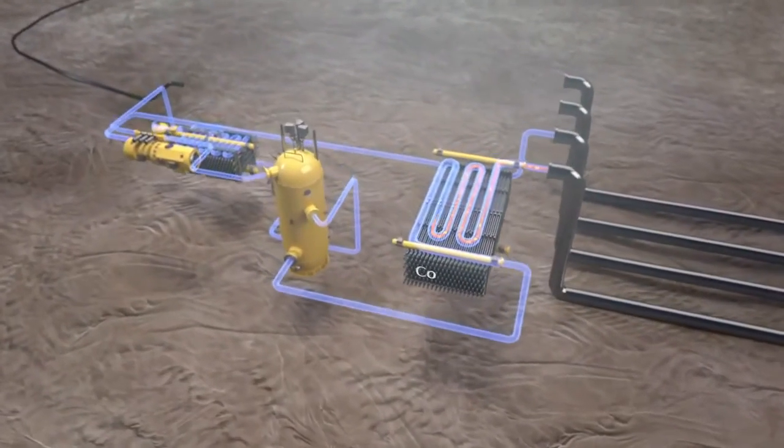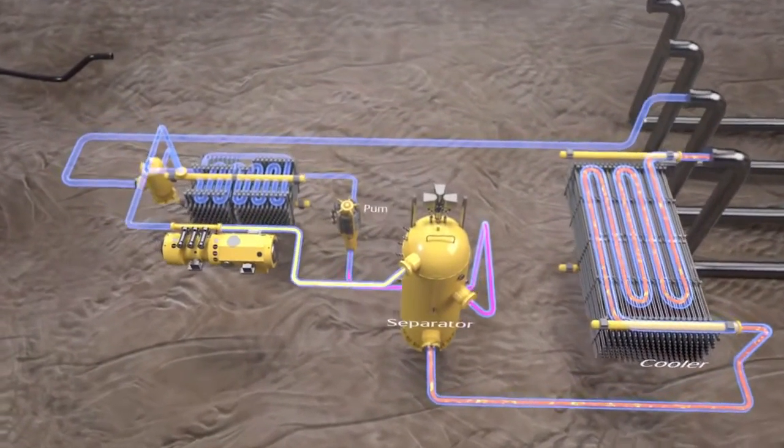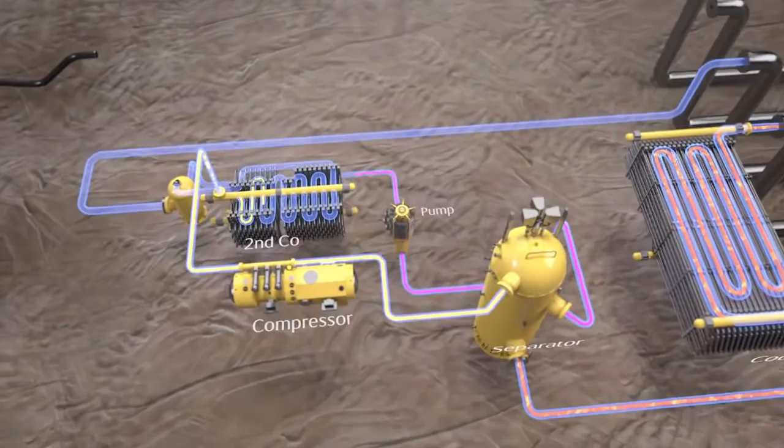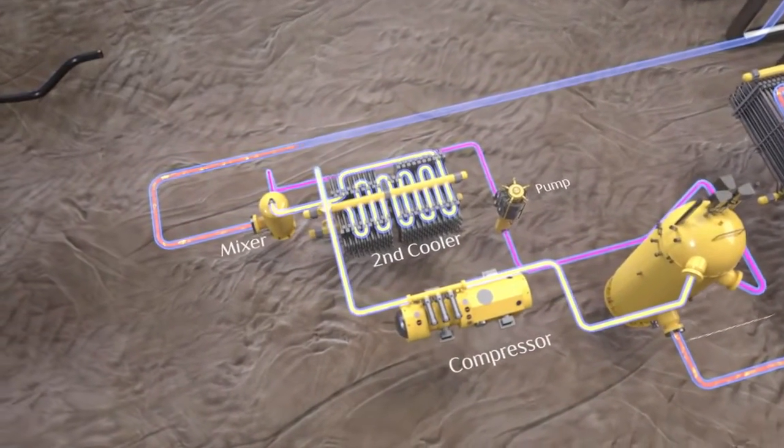First, the compressor cools the incoming components and separates fluids from gases. The gases are then compressed, cooled once more, and mixed back with the fluids before being pushed to the receiving facility at Osgard B.